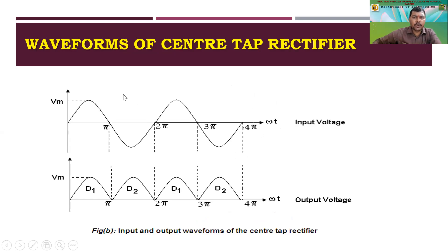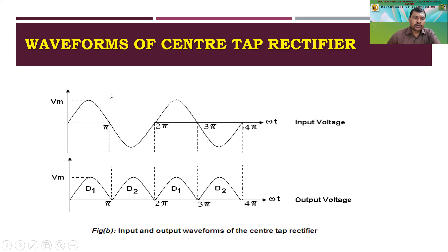This is the waveform we get out of this rectifier circuit. The input is a sine wave which starts from zero, then reaches pi (180 degrees), at which point it switches to the negative half. It remains in the negative half during the 2pi region. After 2pi it continues up to 3pi, and after 3pi it remains in the negative half up to 4pi, repeating itself. We are plotting amplitude versus phase angle.